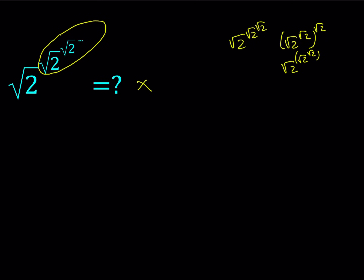When you call this x and look carefully at the exponent of the very base square root of 2, you notice that the exponent is the same infinite tower — it goes square root of 2 to the power square root of 2 to the power square root of 2, so on and so forth, forever. So when you call the whole thing x, the exponent becomes x as well. This gives us the equation: square root of 2 to the power x equals x.